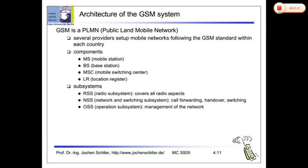The first key component is the MSC — Mobile Switching Center. Associated with the MSC are two registers: the Visitor Location Register (VLR) and the Home Location Register (HLR). The main subsystems are RSS (Radio Subsystem), NSS (Network Switching Subsystem), and OSS (Operations Support Subsystem).